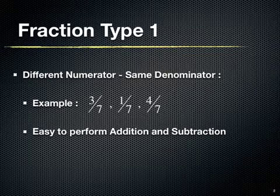In this session, we will learn about fractions where we have different numerators and same denominator. As we can see in the below example, here 3 upon 7, 1 upon 7, and 4 upon 7 are this type of fractions.